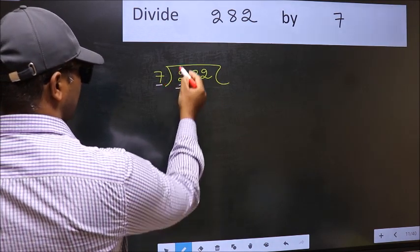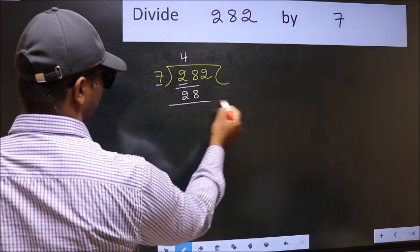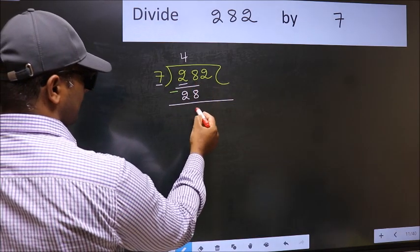When do we get 28 in 7 table? 7 fours 28. Now you should subtract. 28 minus 28, 0.